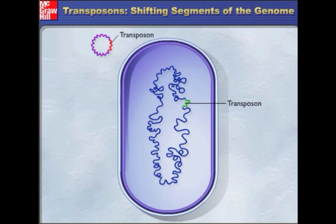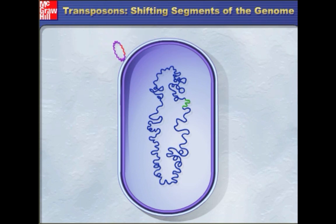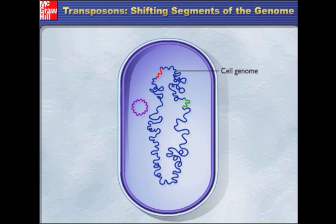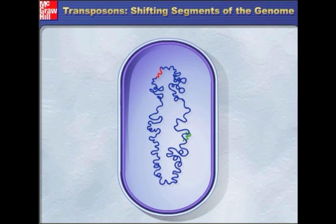Transposons are segments of DNA that are capable of shifting from one location to another. A transposon enters the cell by being carried on a plasmid, and can then move from the plasmid into the host cell genome. A transposon can also move from one site on the host genome to another site on the host genome. When some transposons move, they replicate, leaving a copy in the original position. A transposon can also move from the host genome to a plasmid.